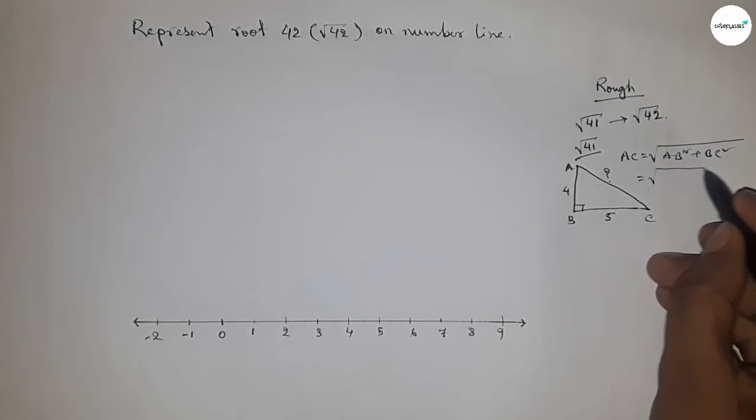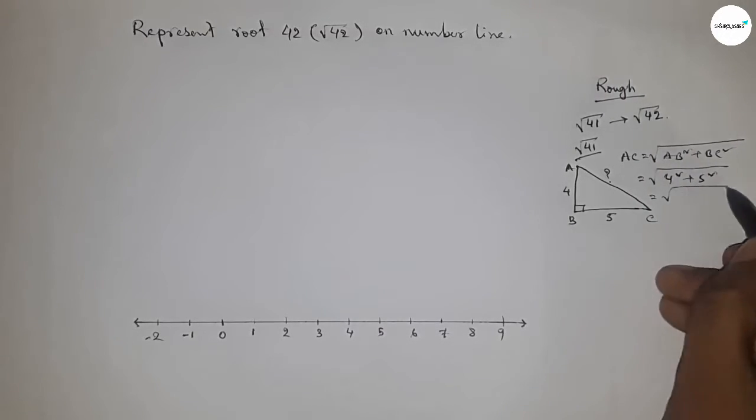So root over 4 square plus 5 square, so 16 plus 25, so this is root 41 unit. So this concept applying between 0 to 5.